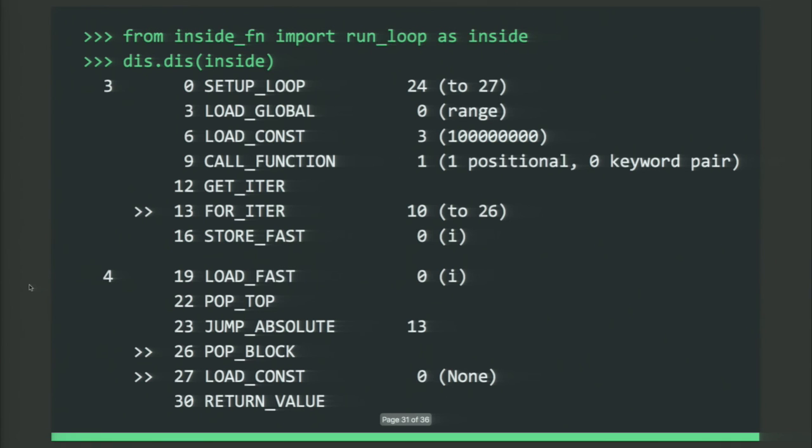And here we see, okay, when we're doing inside, we're using something called store fast and load fast. And we're doing outside, it's store name and load name. See 16 and 19 there? So I don't know what those mean. Store fast sounds like it would be faster. And load fast sounds like it would be faster. But I don't know why or what these do. So how can I find out?